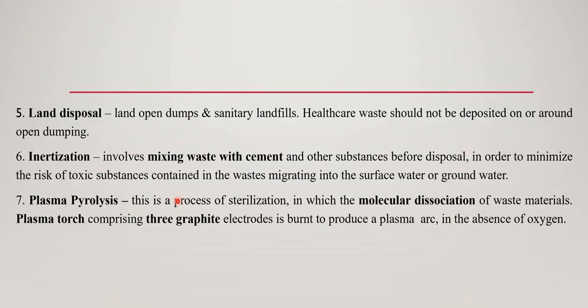Seventh is plasma pyrolysis. It is a process of sterilization where molecular dissociation of waste material occurs. A plasma torch comprising three graphite electrodes is burnt to produce plasma in the absence of oxygen. Eighth is the autoclaving method.